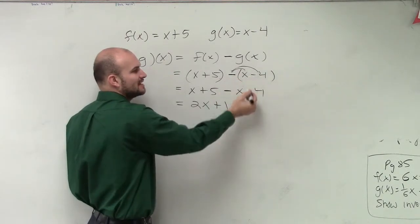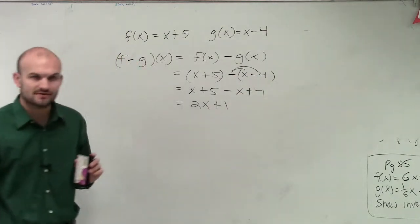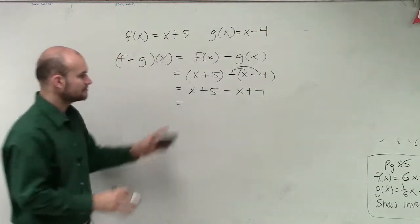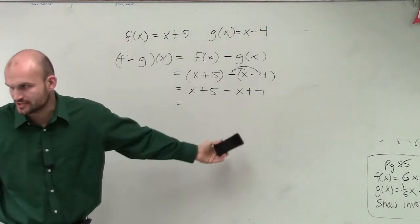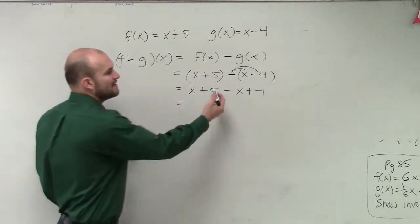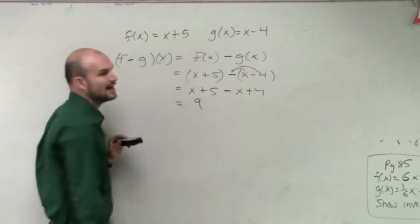Well, therefore, minus a negative 4 is going to be now a positive 4. So when I combine like terms, I'm going to have x minus x, which is 0x, which is 0, and then 5 plus 4, which is 9.